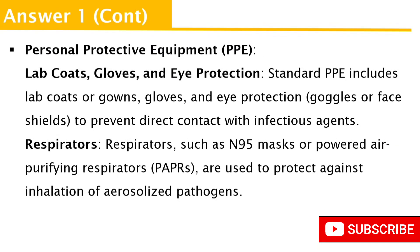Another protective mechanism is personal protective equipment. We make sure we wear our lab coat, hand gloves, and high protection where possible — this helps to protect us from pathogens and aerosols. We also wear respirators like the N95 mask, which you can breathe through, and this mask traps particles so they cannot get into your system.